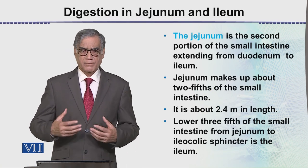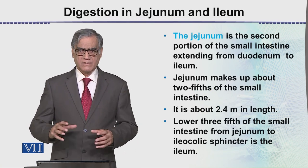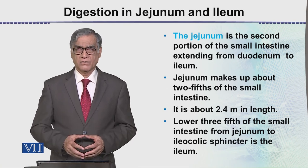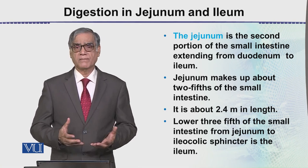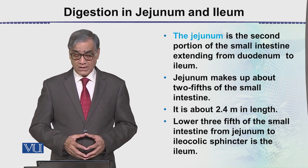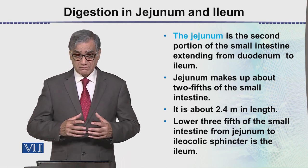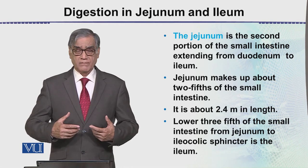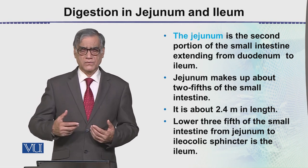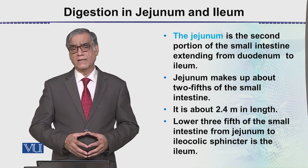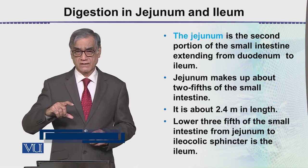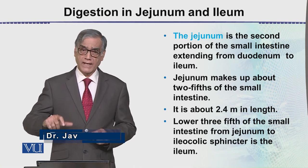Jejunum is the second part of the small intestine. The first part is the duodenum, and jejunum becomes continuous with the ileum. So these are the two parts: the jejunum and the ileum.